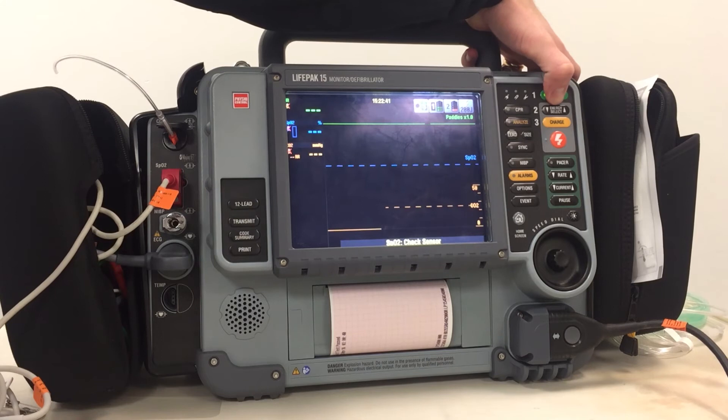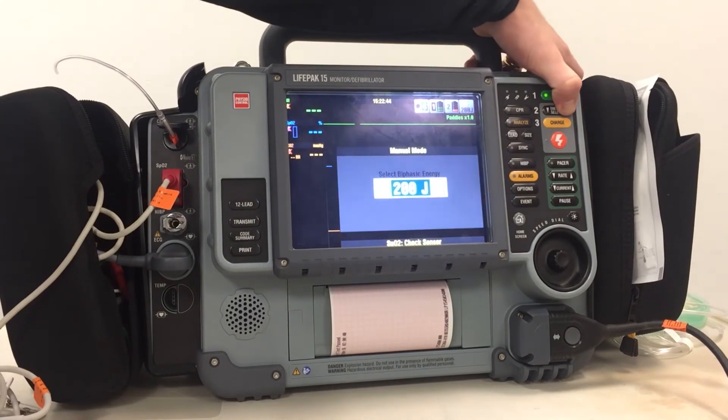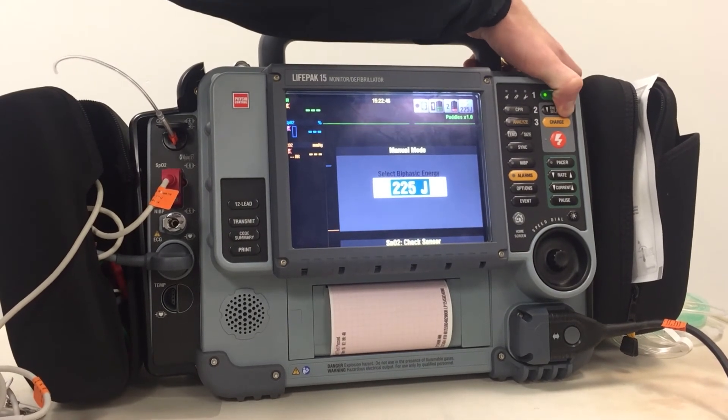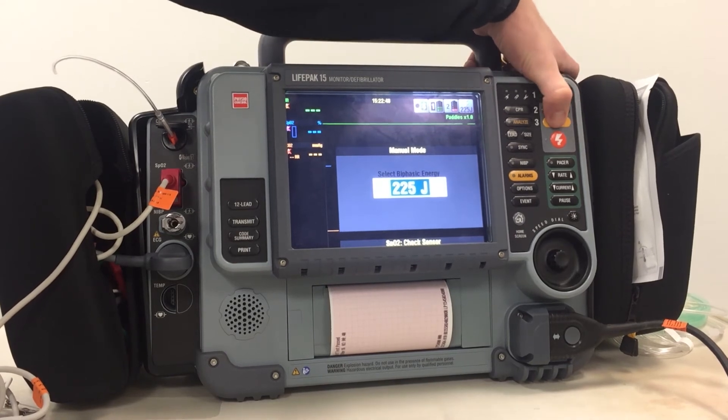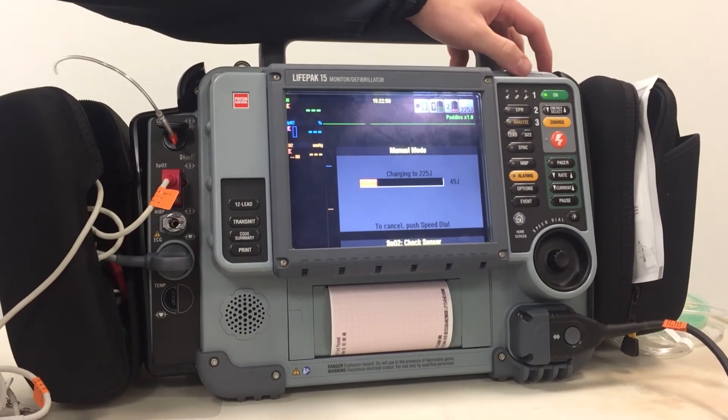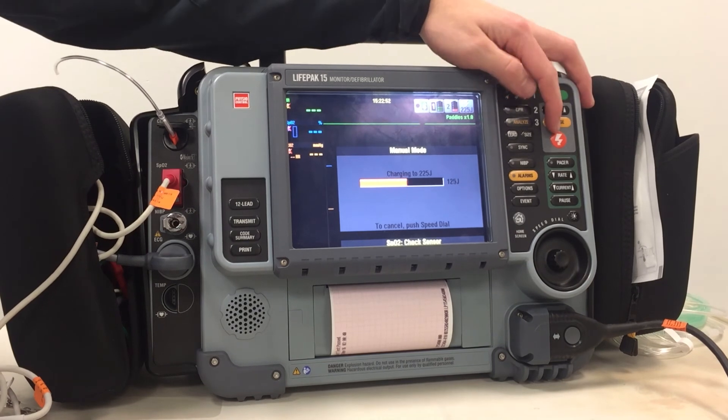To defibrillate, you'll use the energy select button on the upper left to select the number of joules you want to give, then hit charge. To deliver the shock, you hit the orange lightning bolt.